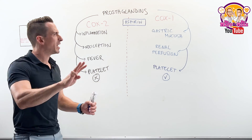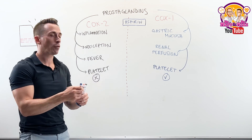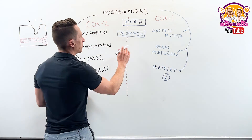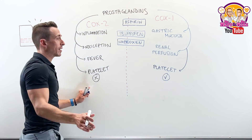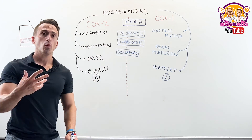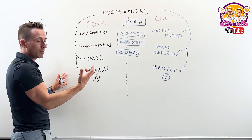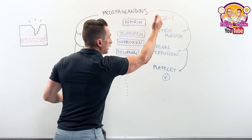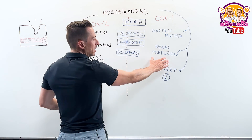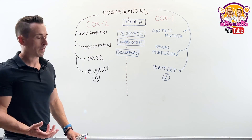The next three NSAIDs — ibuprofen, naproxen, and diclofenac — at recommended dosages roughly equally inhibit COX-2 and COX-1. While they're great at inhibiting inflammation, stopping the painful stimulus, and reducing fever, if you take too much over time they can have side effects: increased likelihood of stomach problems, decreased renal perfusion leading to acute kidney injury, and anti-clotting effects.